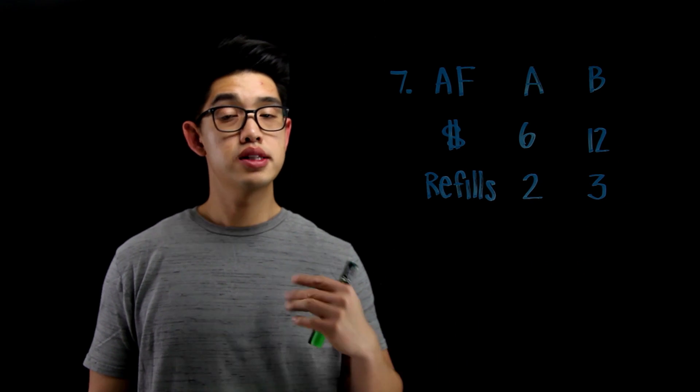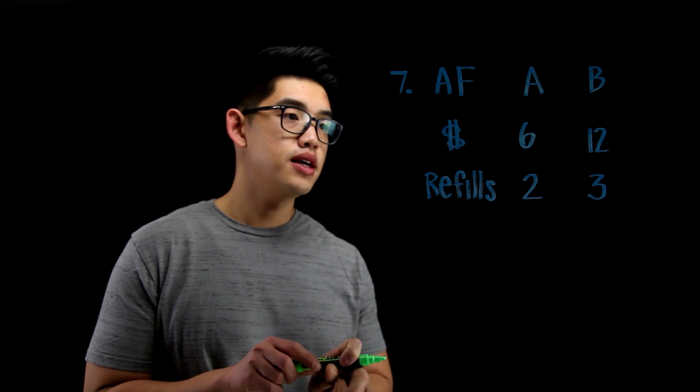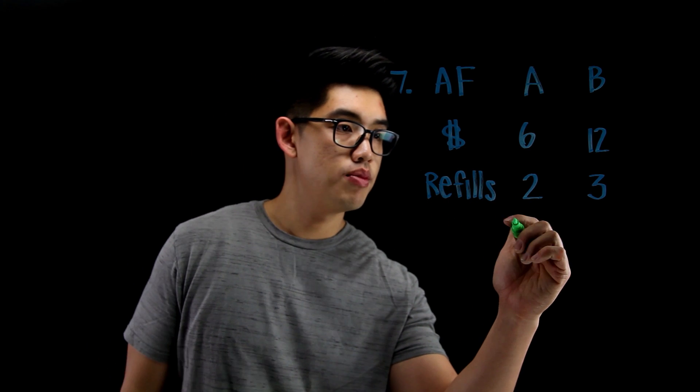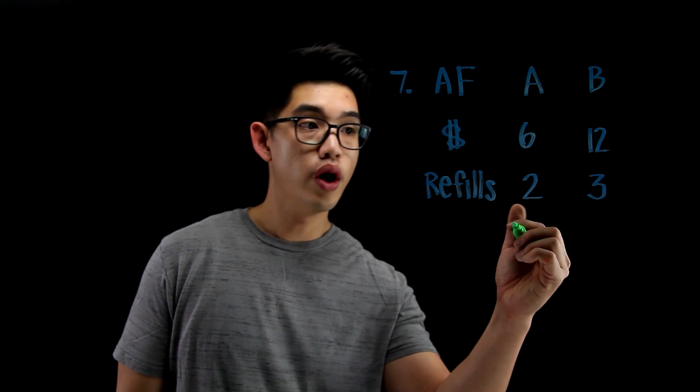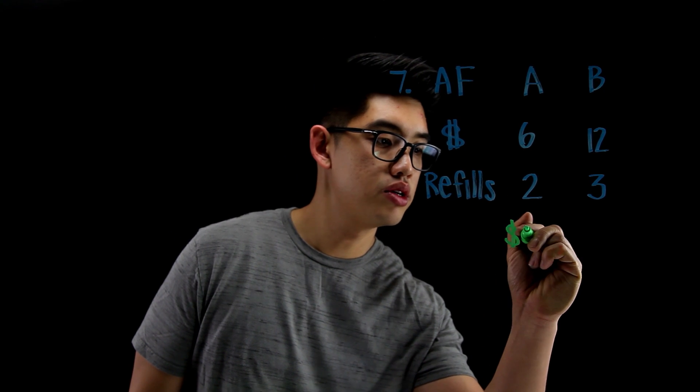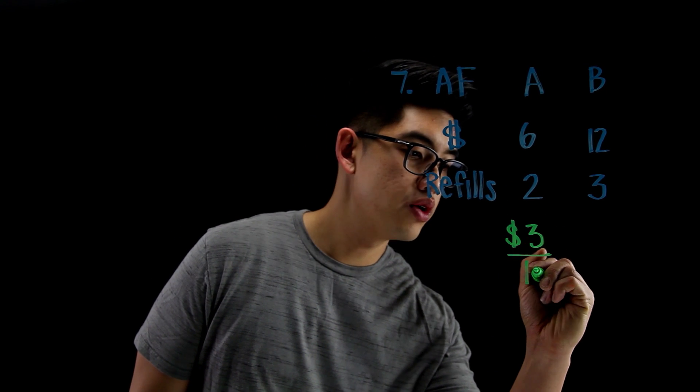Let's do some division. Let's find the unit rates. Let me see. If I do 6 divided by 2, that's going to be $3 for one refill. So I'm going to write $3 for one refill.